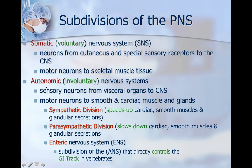Next we have the autonomic, or the involuntary, nervous system. There are a couple of different divisions for those. These include sensory neurons from the visceral organs to the central nervous system — these would be your internal organs — and motor neurons to smooth and cardiac muscle and glands. The first division is the sympathetic division: it speeds up your cardiac smooth muscles and glandular secretions.